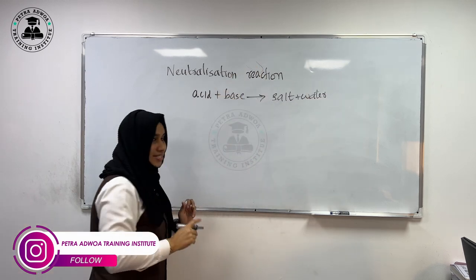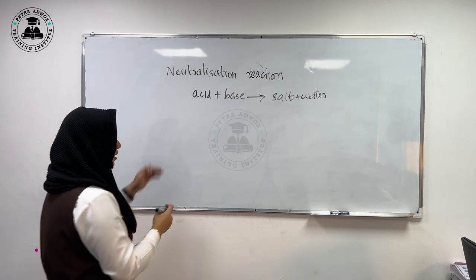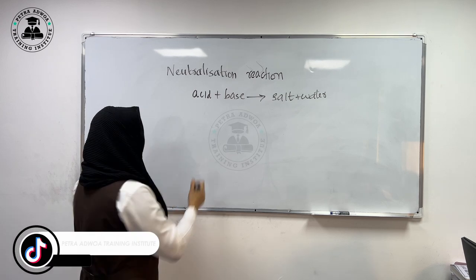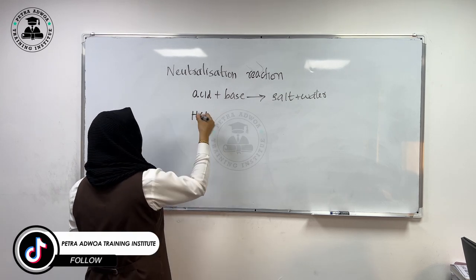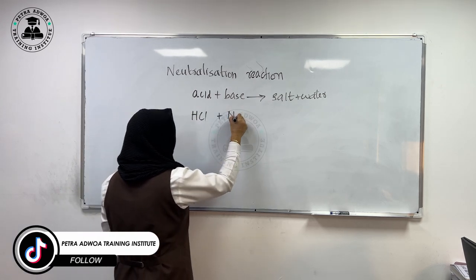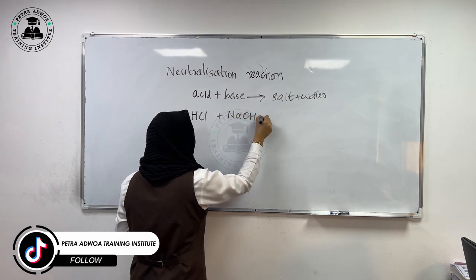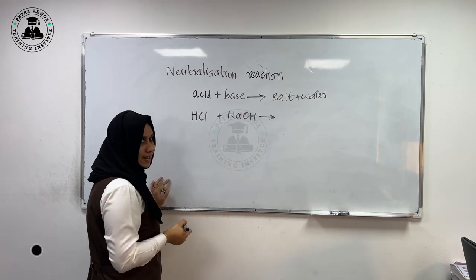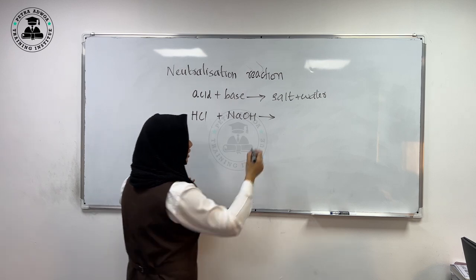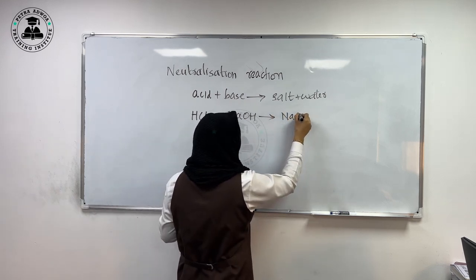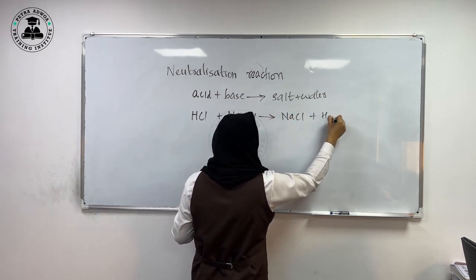So we will explain through an example. An example for an acid is HCl and the base is sodium hydroxide. We write the chemical formula as NaOH. Then salt is the NaCl produced here and water H2O.